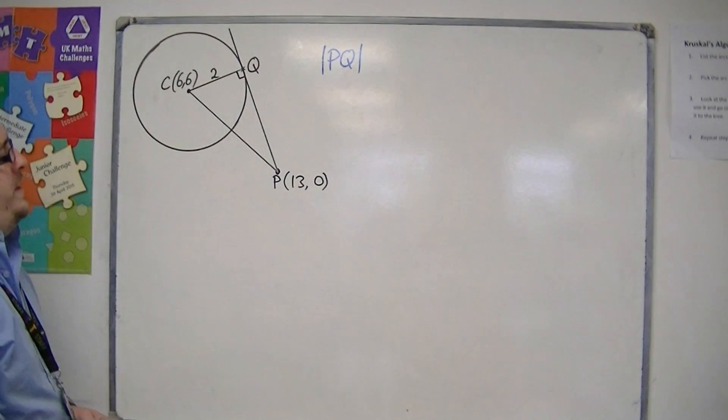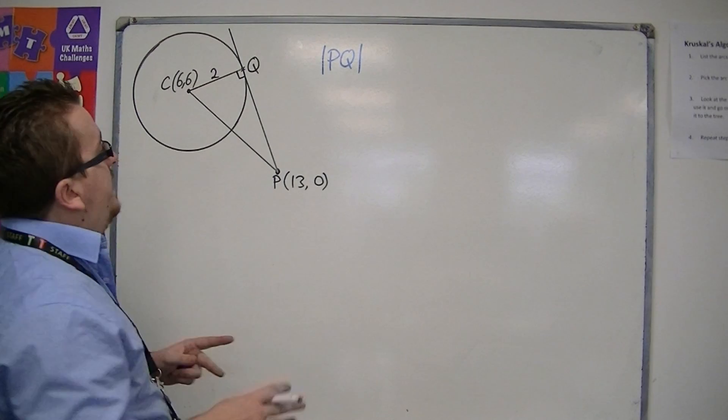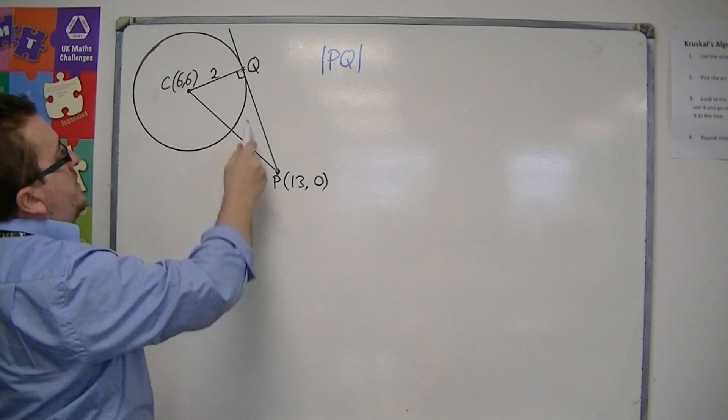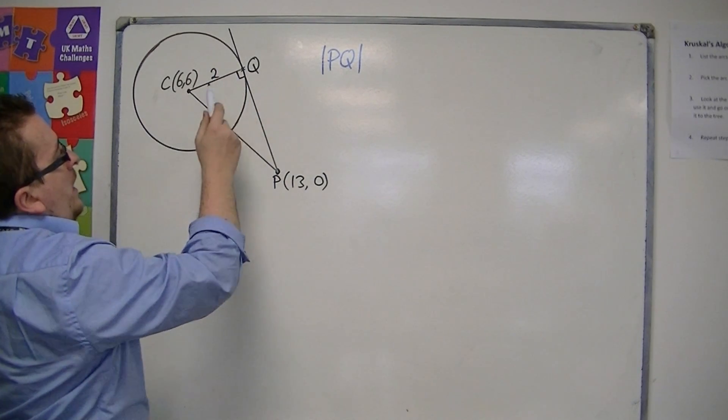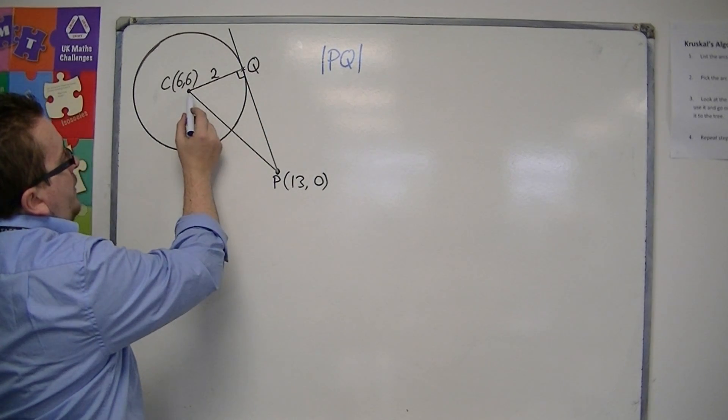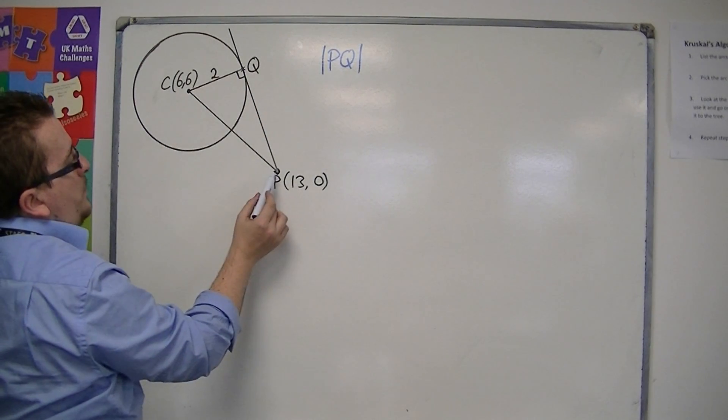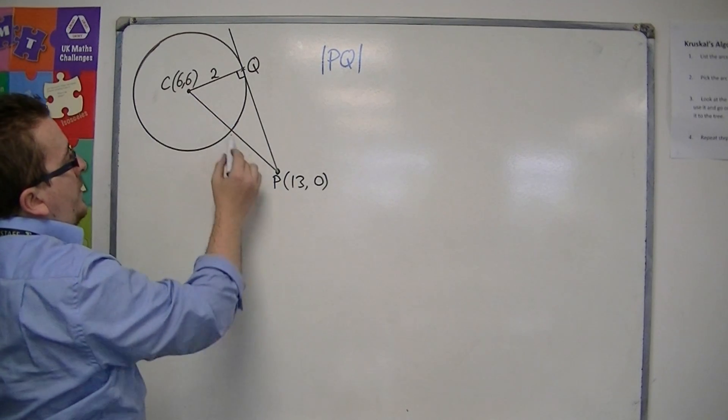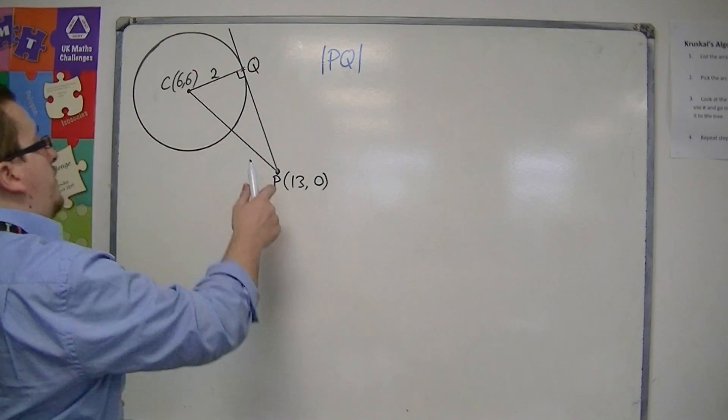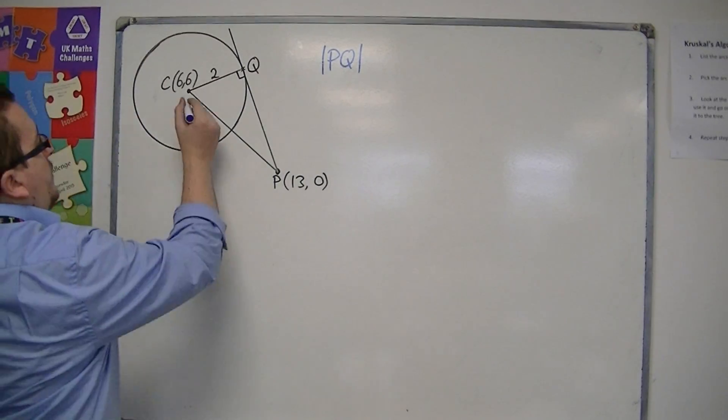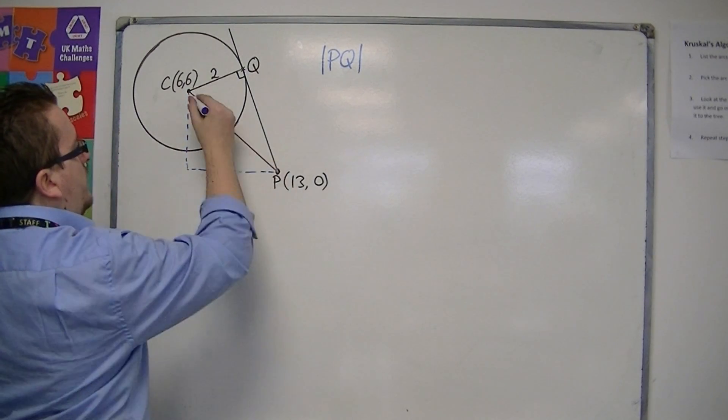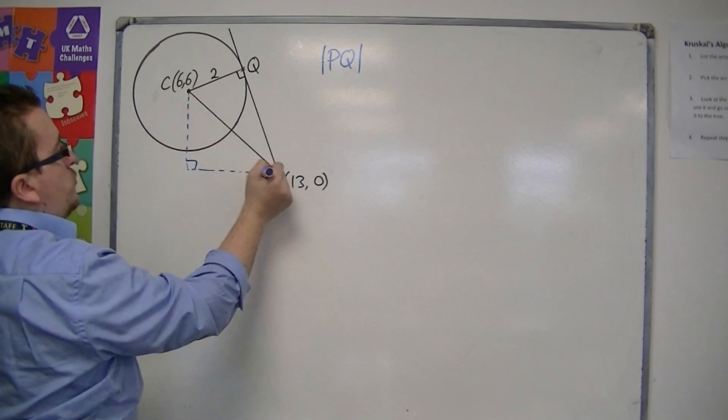How would we do this? Well, first of all, we know that the normal and the tangent meet at right angles, so we have a right-angled triangle. Now, if we could work out the distance between C and P, then we would have this length and that length, which would allow us to use Pythagoras to work out the length we want. So what we need is that length by using Pythagoras on this triangle.